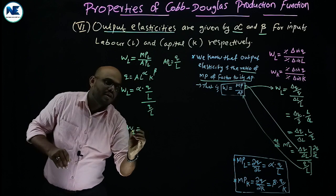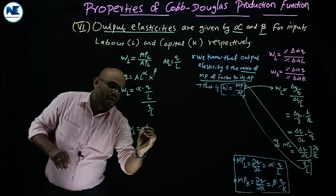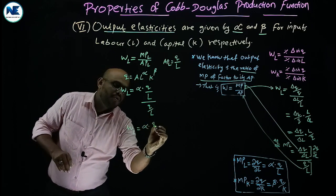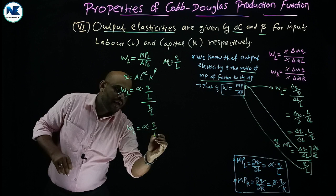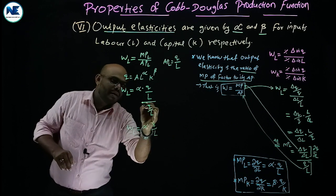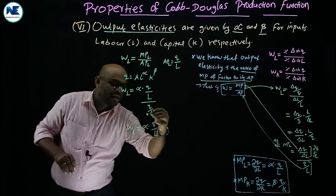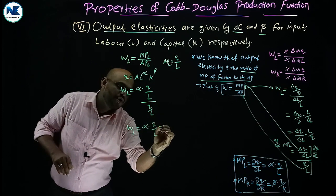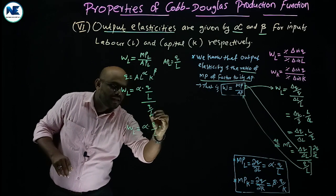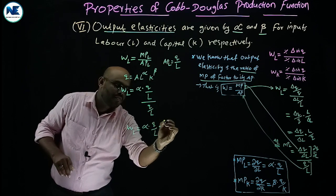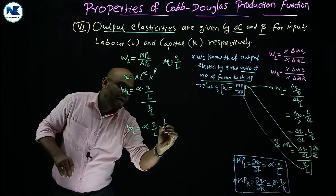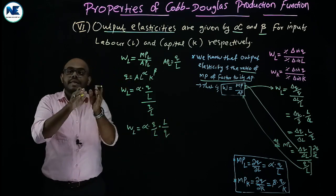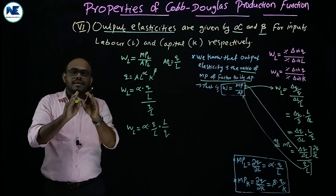Output elasticity of labor equals marginal product of labor divided by average product of labor, that is (alpha × Q / L) divided by (Q / L).